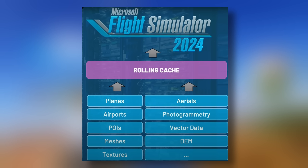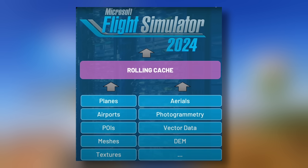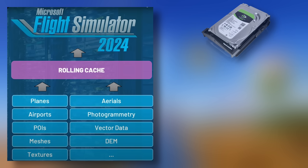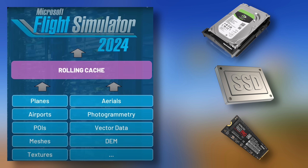First let's cover some basics, as it's quite likely the vast majority of users will need to use a rolling cache. A rolling cache is a designated storage space on your hard drive, so the speed of that hard drive is relatively important. The figures shown are read speeds and are indicative only — write speeds are often slower. It goes without saying that faster is better. A device that uses flash memory such as a solid state drive, or preferably an NVMe device, could make a huge difference to performance overall. A traditional hard drive using a magnetic spinning platter could well induce stutters. NVMe drives of 500GB to 1TB are not expensive and can be found for as little as 50 pounds or about 60 US dollars.